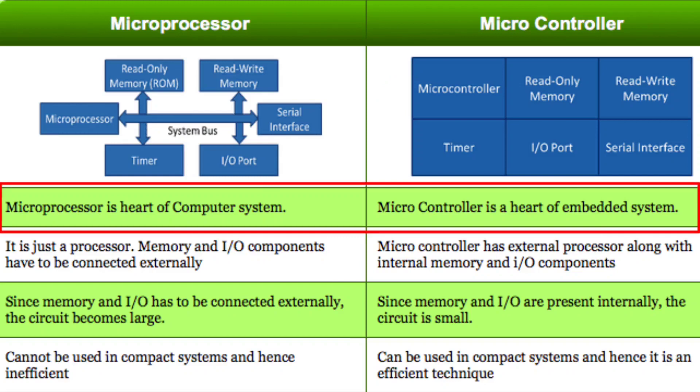The microprocessor is the heart of a computer system. At the same time, the microcontroller is the heart of an embedded system. A microprocessor is used for general purpose applications, while a microcontroller is dedicated to special purpose applications.